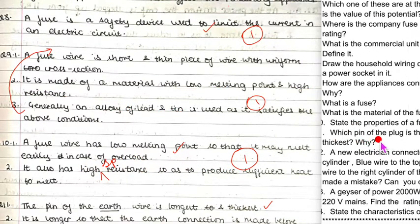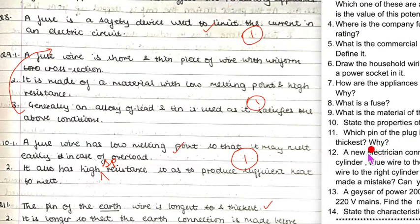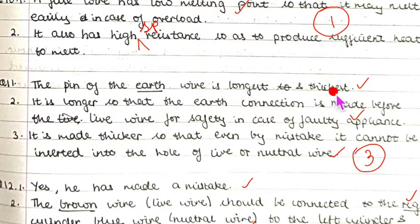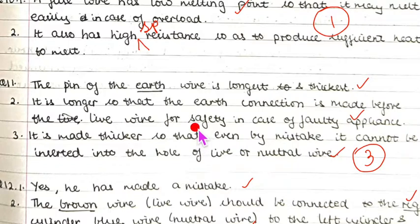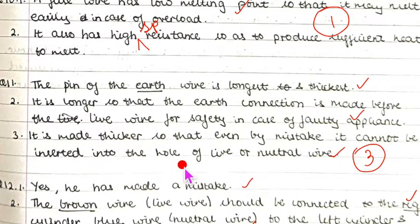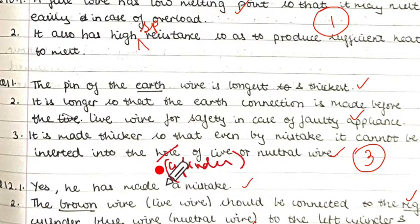Question eleven: Which pin of the plug is the longest and the thickest and why? The earth pin is the longest and thickest. It is longer so that the earth connection is made first before the live wire is connected to the appliance, for safety in case of a faulty appliance. It is made thicker so that by mistake it cannot be inserted into the live or neutral cylinders.